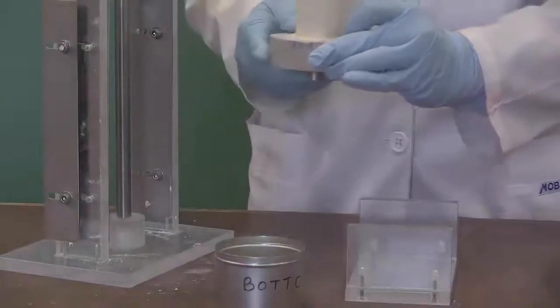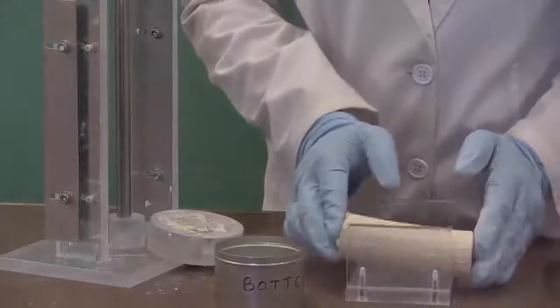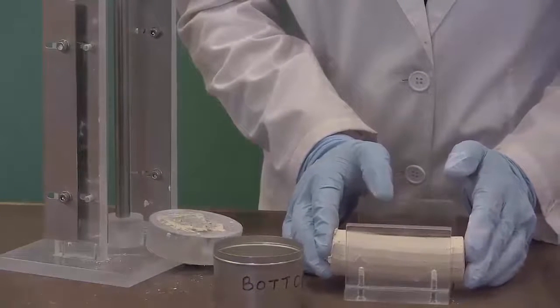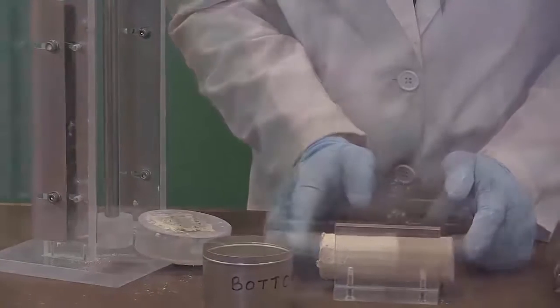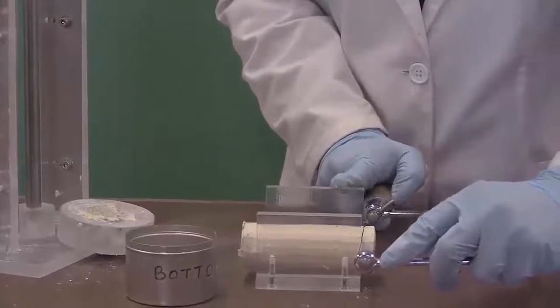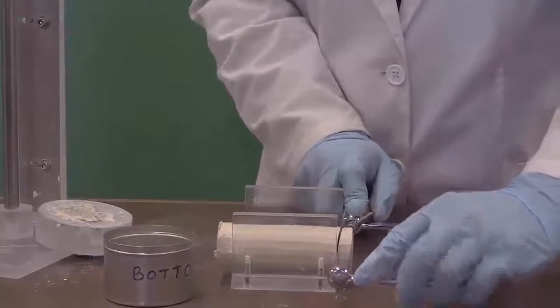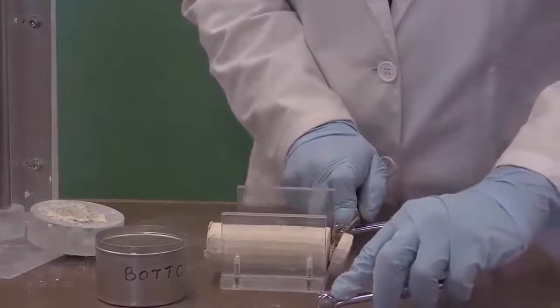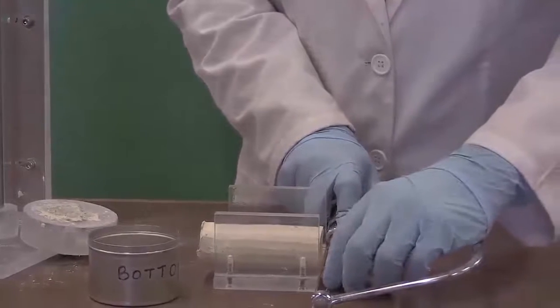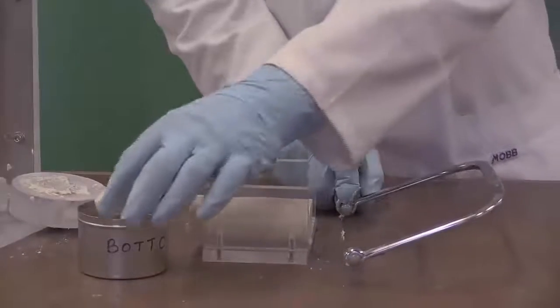Gently take the trimmed sample out of the soil lathe and place it horizontally on the mini soil lathe. Using the wire saw, trim the bottom part of the specimen with the aid of the mini soil lathe. Collect the bottom trimmings into one of the metal containers for the determination of moisture content.